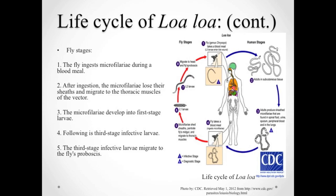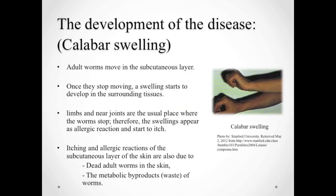In the fly stage, the fly ingests microfilaria during a blood meal when it bites an infected human host. Following ingestion, the microfilaria lose their sheaths and migrate from the fly's midgut to the thoracic muscles of the vector. The microfilaria then develop into first-stage larvae, and subsequently into third-stage infective larvae in the thoracic muscles. These third-stage infective larvae migrate to the fly's proboscis and can infect another human when the fly bites to take a blood meal.